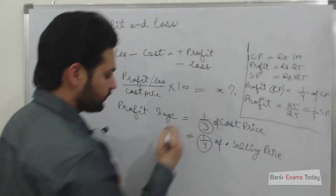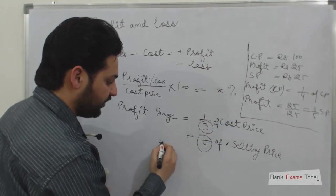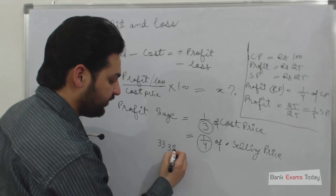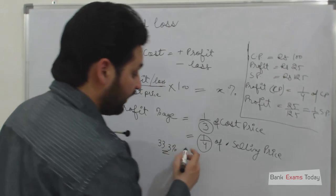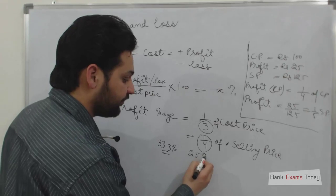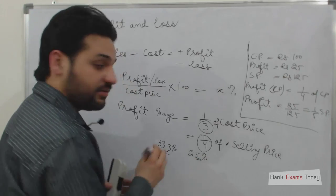If the profit percentage is 33.333% of cost price, then it will be 25% of sales price in case of profit.